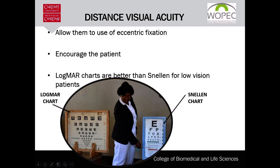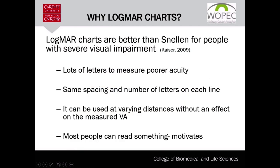The LogMAR chart is preferred to the Snellen acuity chart; it has been proven to measure low visual acuity better and is more reliable and consistent. LogMAR charts have the same spacing and number of letters on each line, so the relative crowding of letters is non-existent. They can be used at varying distances without affecting the measured VA. Each letter of the LogMAR chart has a value of 0.02, and a sum of five letters on a line gives a value of 0.1.